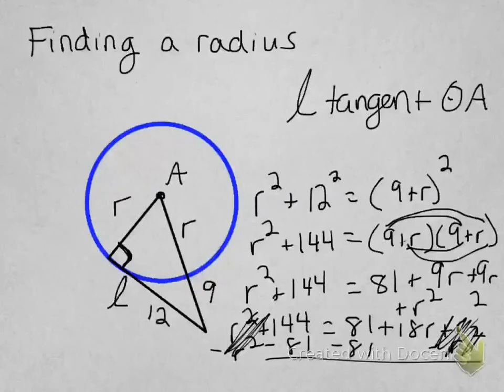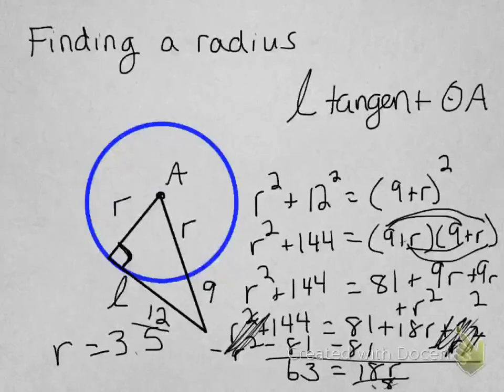And there's the bell, but I'm going to finish this. I get 63. So 63 equals 18r. Divide by 18. I'm running out of room. Divide by 18. R equals 3.5. That's your radius.